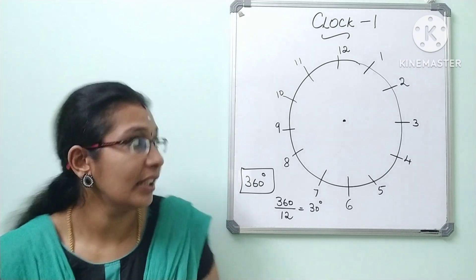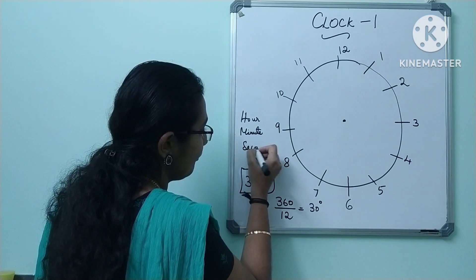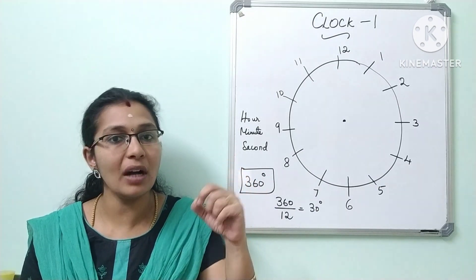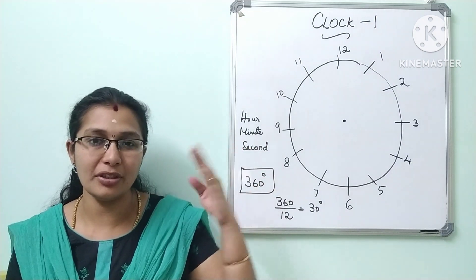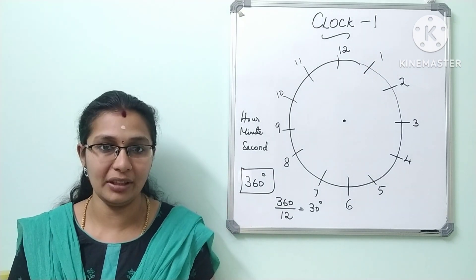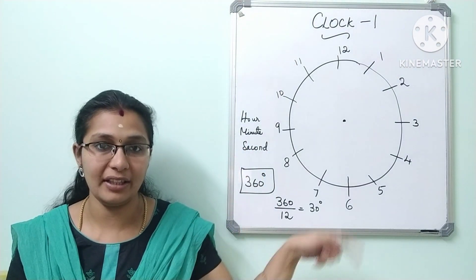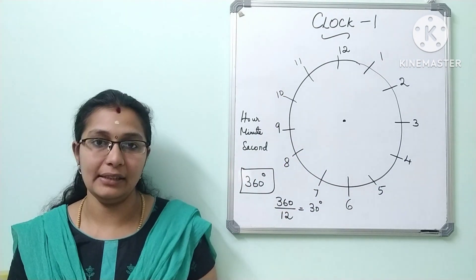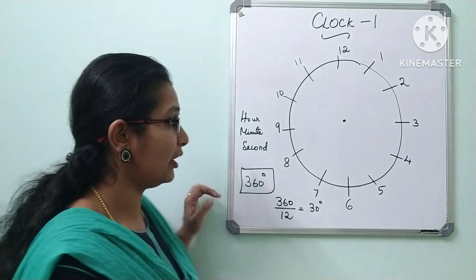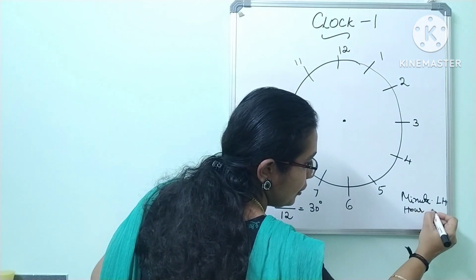The clock has three hands: the hour hand, the minute hand, and the second hand. The second hand is easy and visible. The minute hand is a long hand and the hour hand is a short hand.